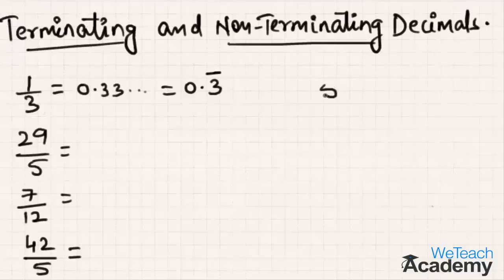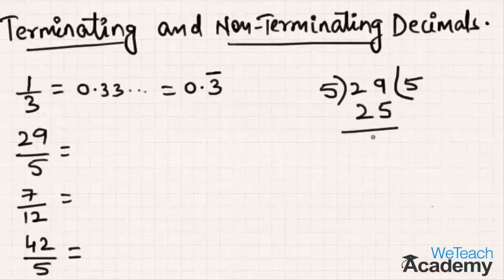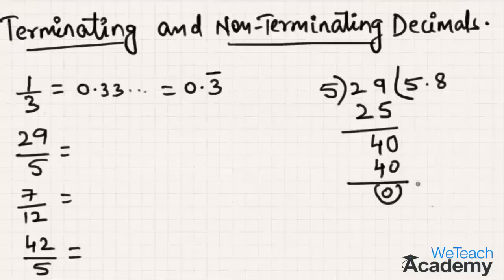For the second example, let us divide 29 by 5. Now 5 times 5 is 25, and 29 minus 25 gives remainder 4. Since 4 is not divisible by 5, we place a point here and write 0. Now 5 times 8 is 40, and 40 minus 40 gives remainder 0. Hence the decimal form of 29 by 5 is 5.8, which is a finite decimal, so it is a terminating decimal.